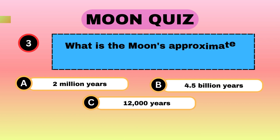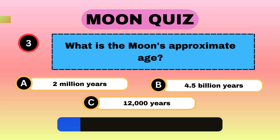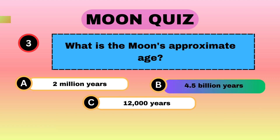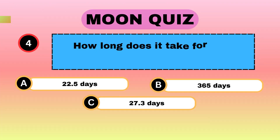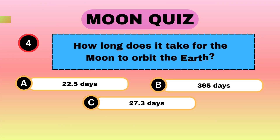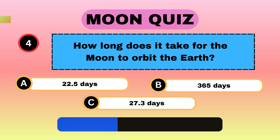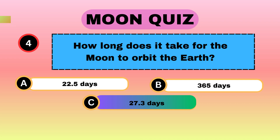What is the Moon's approximate age? 4.5 billion years. How long does it take for the Moon to orbit the Earth? 27.3 days.